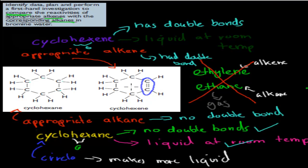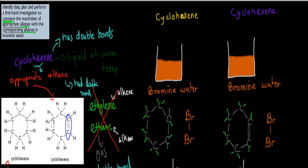So what you would have done is put these two into bromine water. Here we have bromine water, and we've got cyclohexane and cyclohexene. You put a couple of milliliters of each into the bromine water, and you would have observed for a reaction — you would have looked at what happens to the water itself when you put in those drops of cyclohexane and cyclohexene.